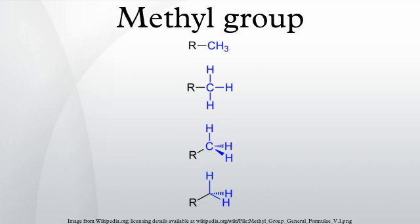A methyl group is an organic radical derived from methane, containing one carbon atom bonded to three hydrogen atoms, written as CH3. The group is often abbreviated as Me. Such hydrocarbon groups occur in many organic compounds, and it is a very stable group in most molecules.